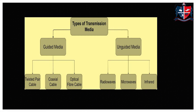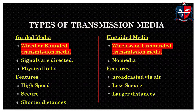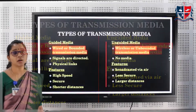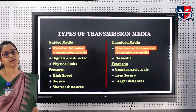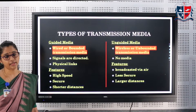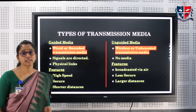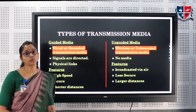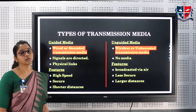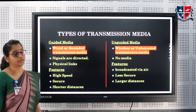There are two types of transmission media: guided media and unguided media. Guided media is also known as wired or bounded transmission media. Here, the signals are transmitted physically. Because of that, it has high speed, is secure, and it covers only shorter distances.